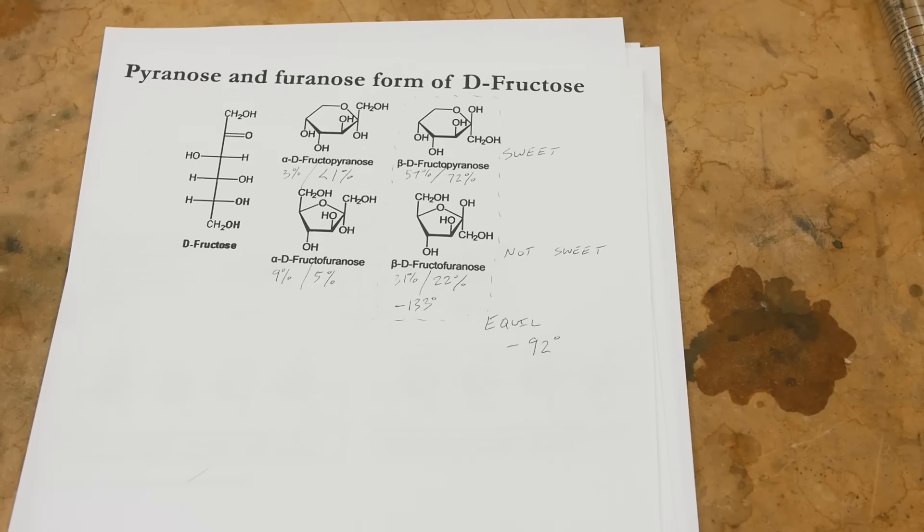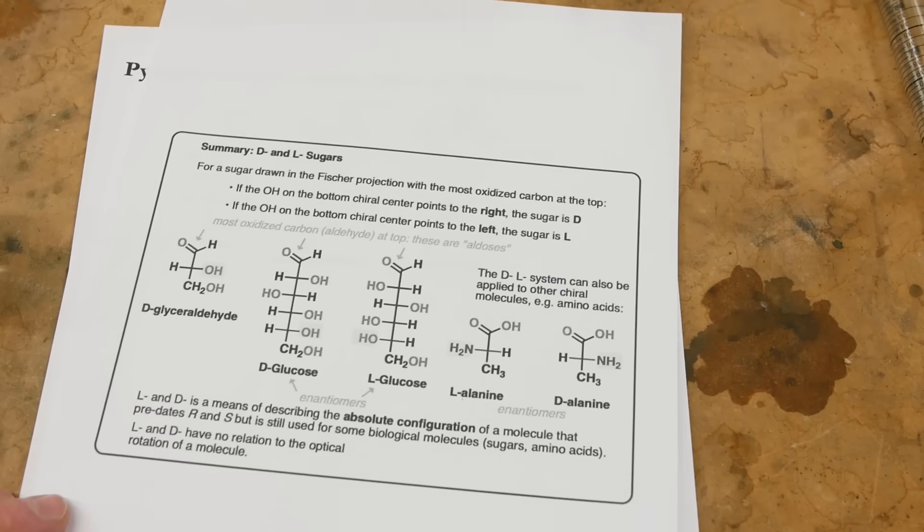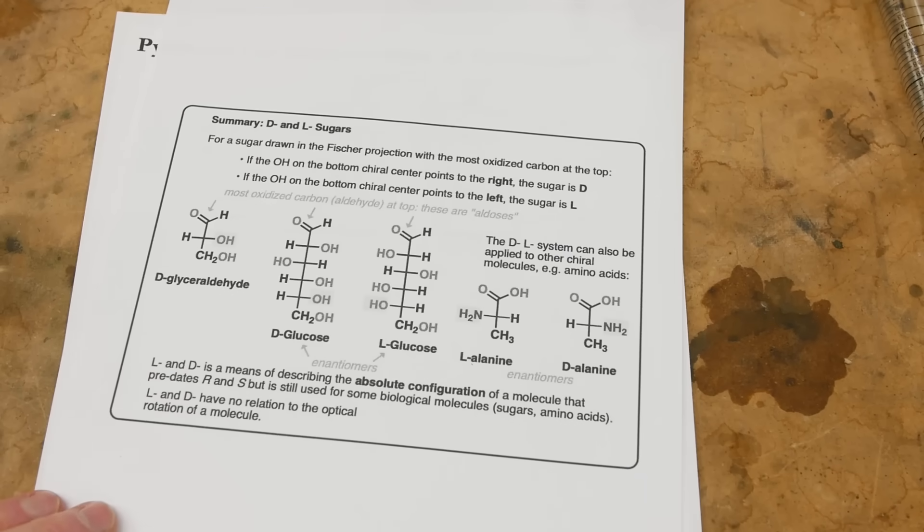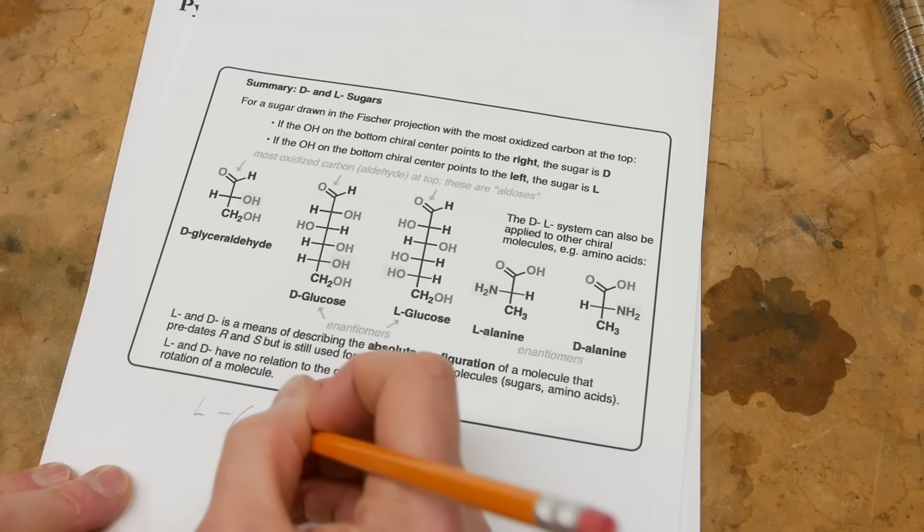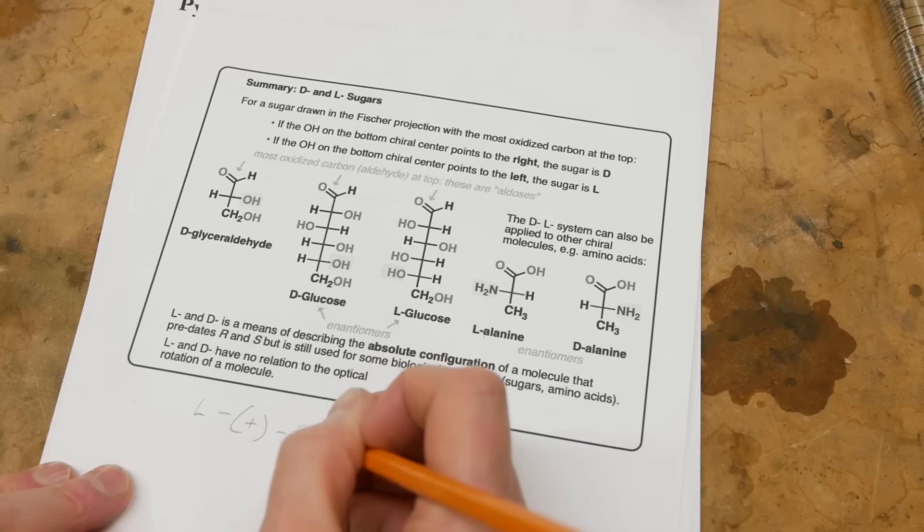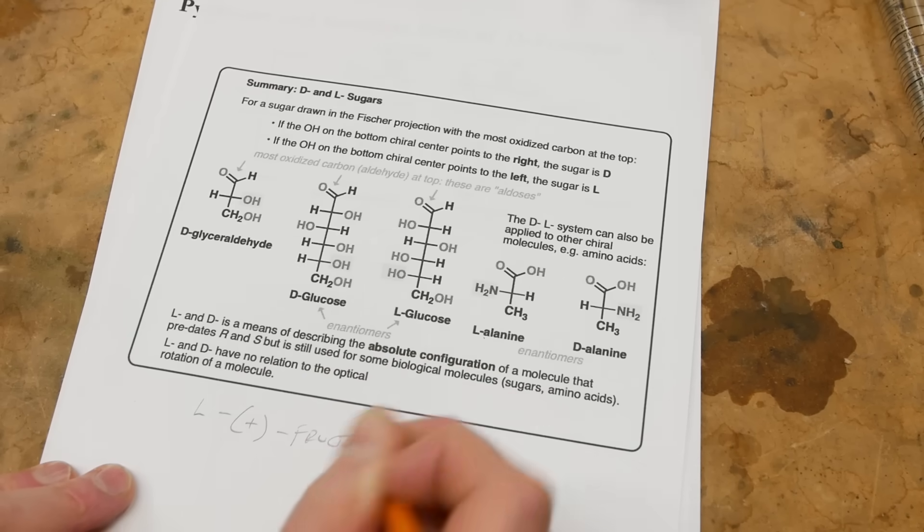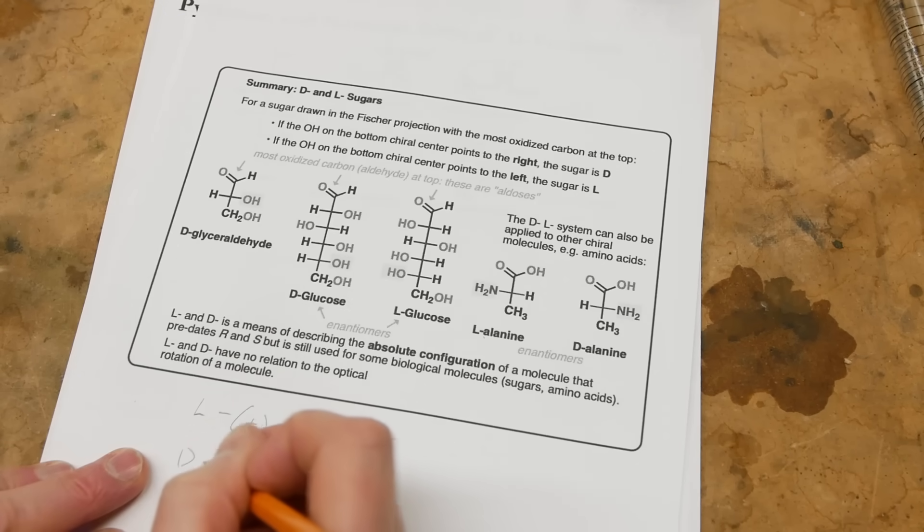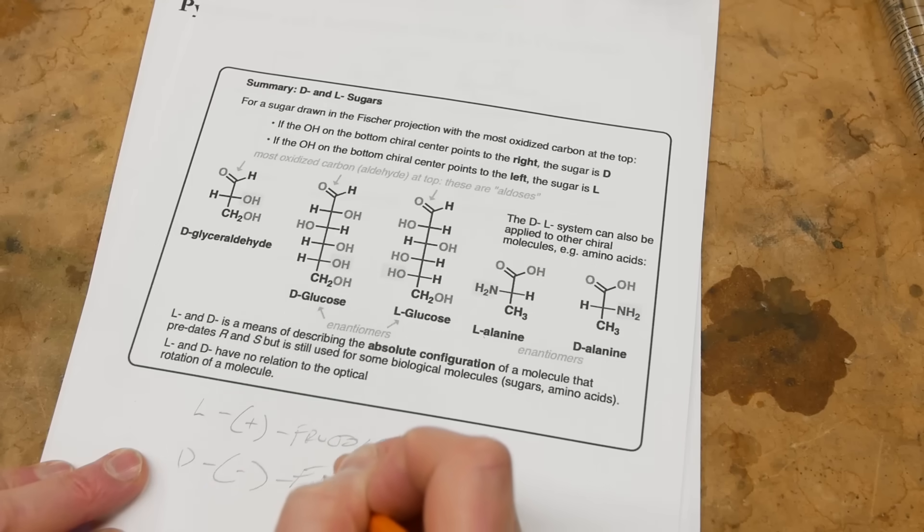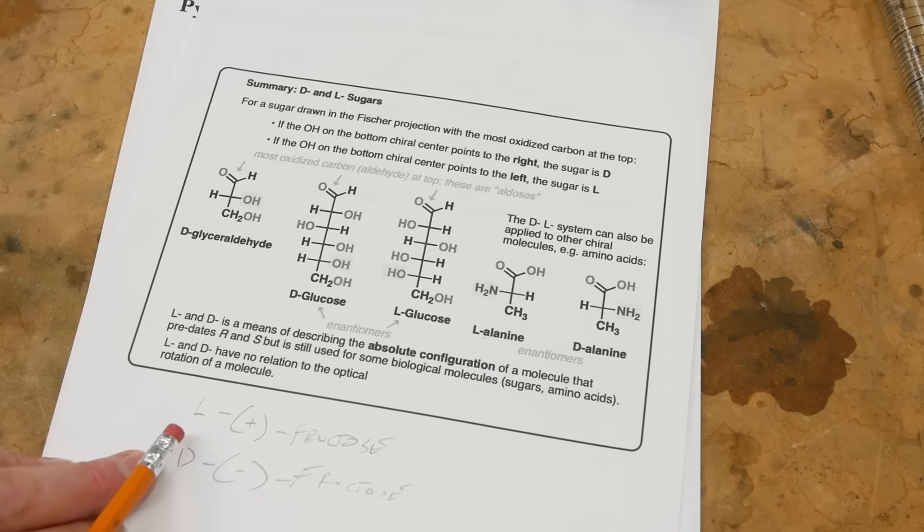And this was in fact the mistake that I think was made in that research paper that I mentioned. And so there's one more bit of notation that you sometimes see in chemistry. You'll see like L plus fructose, meaning that the L form actually has positive rotation or D minus fructose. And so this one follows this rule, whereas glucose is the opposite. Glucose would be D plus and L minus.